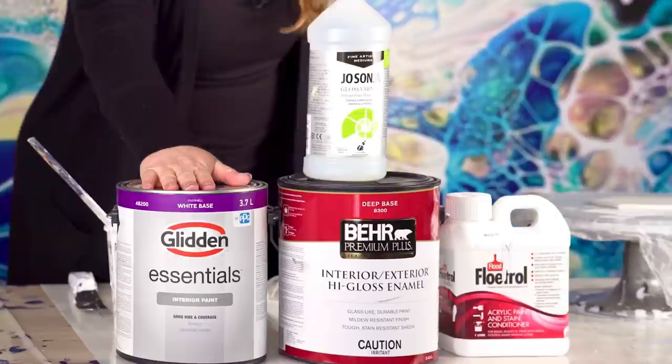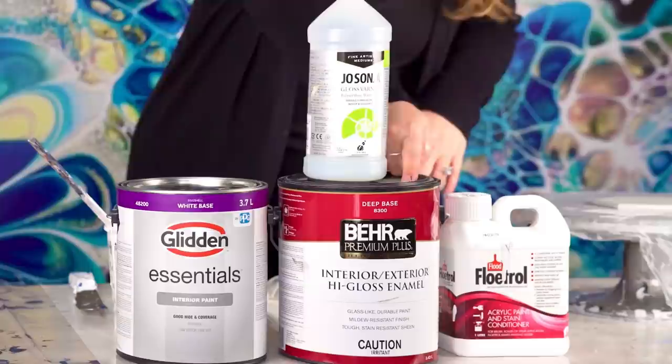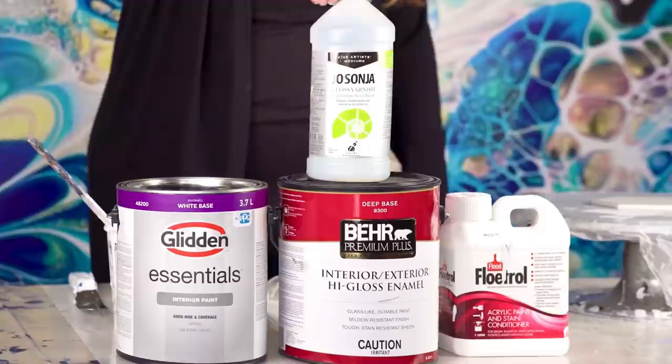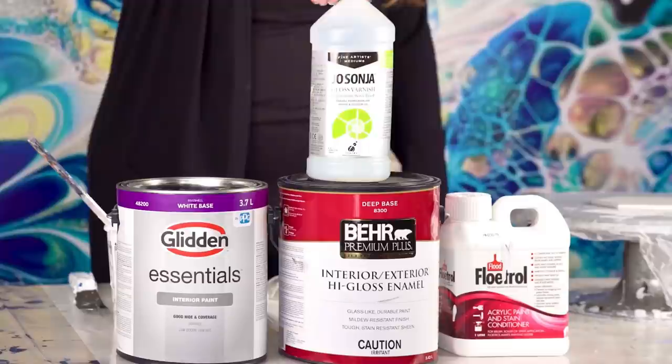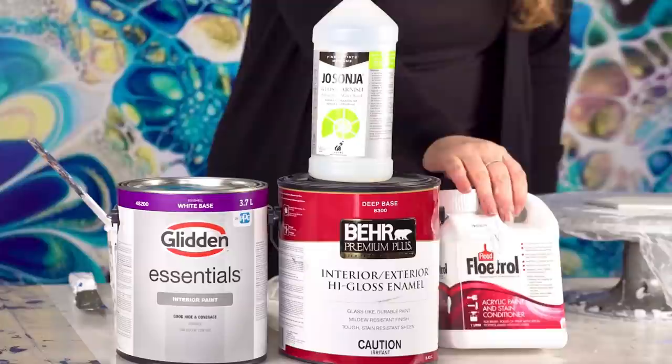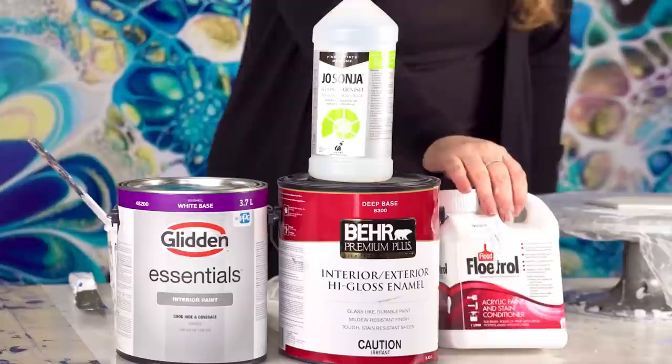Speaking of base, my pouring medium is Behr 8300 and Jo Sonja Gloss. Some people do have a hard time working with these ingredients because they are a bit glossy, so Behr Dynasty is also a good one. I will be doing a consistency video to show you exactly the perfect way to mix your pouring medium. And finally, the magic sauce—you need Australian Floetrol. When we started the bloom, it was really hard to get our hands on Australian Floetrol.